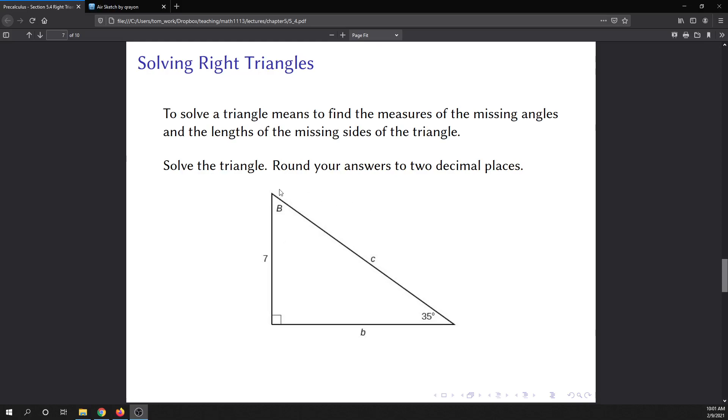All right, so let's go ahead and work this problem. Solve the triangle and round your answers to two decimal places. Okay, so the first thing that we want to do, or the easiest thing to do on this particular one, is to find the missing angle here, B.